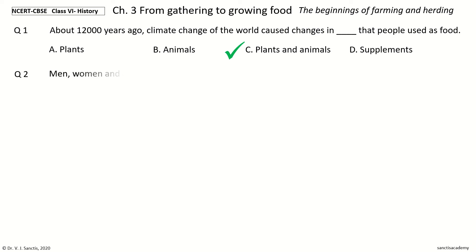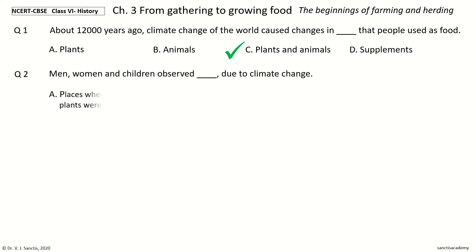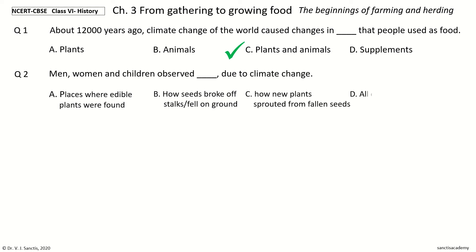Question 2. Men, women and children observed what due to climate change. The options are: places where edible plants were found; how seeds broke off stalks or fell on ground; how new plants sprouted from fallen seeds; all of the above. And the answer is all of the above.